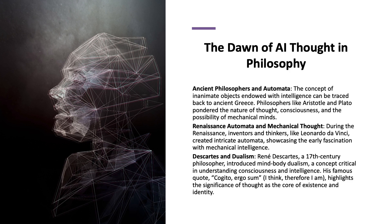During the Renaissance, a renewed interest in science and invention led to the creation of intricate automata. Inventors and thinkers like Leonardo da Vinci designed mechanical devices that could mimic the movements of humans and animals. Da Vinci's sketches and designs including his famous robotic knight showcased an early fascination with mechanical intelligence and the potential of machines.